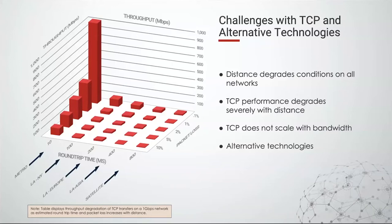When going over congested networks or public internet to a cloud provider, there may be a lot of competing traffic. The round trip time increases, there's potential for packet loss, and that's really where TCP — just by design — starts throttling back and has poor performance.